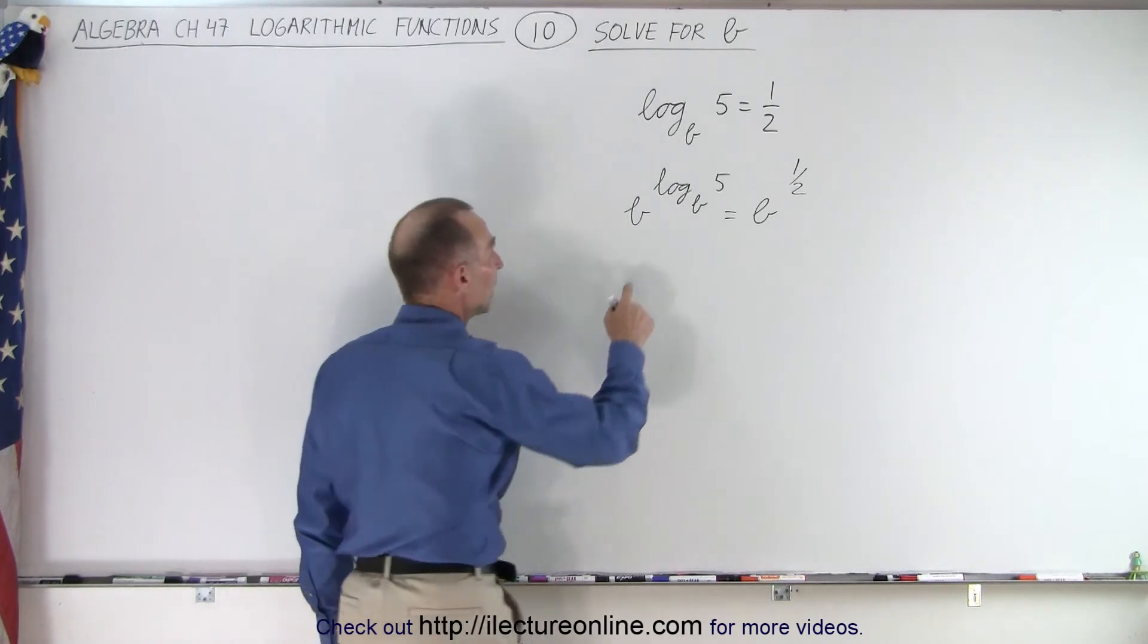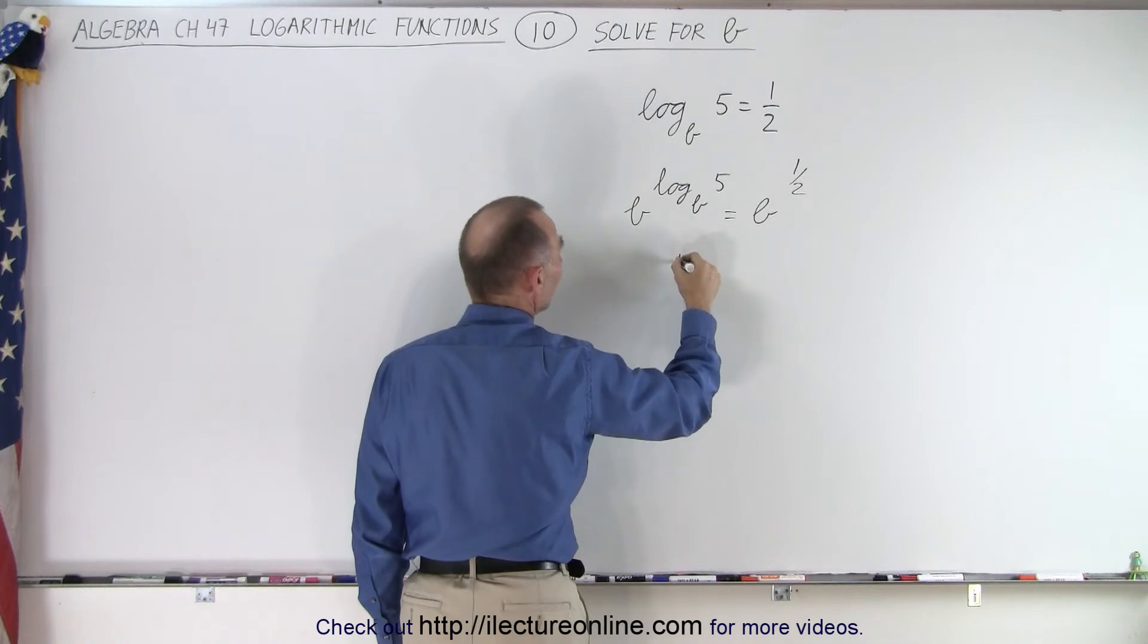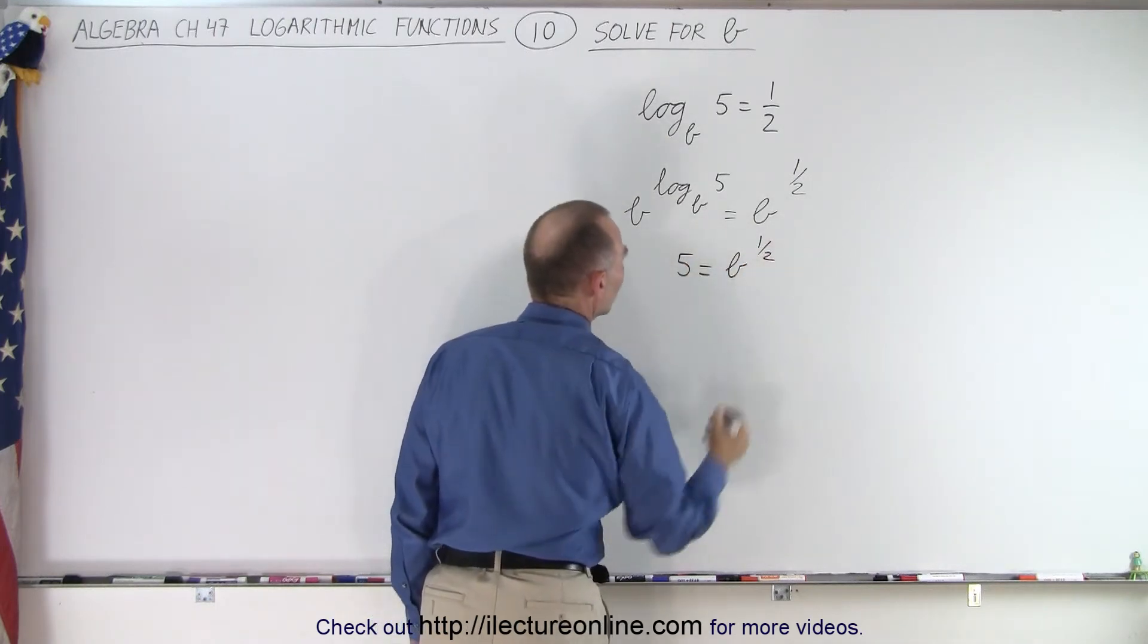Remember the rule: we take the base and raise it to the log of base b of 5. Well, that simply becomes 5 on the left side and on the right side we get b to the 1 half power.